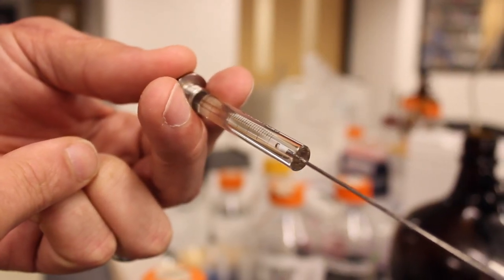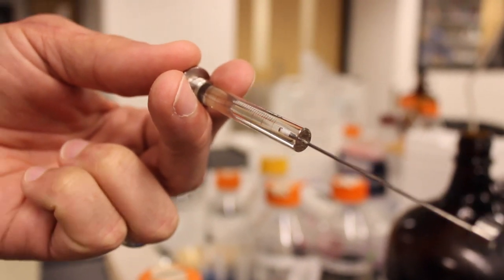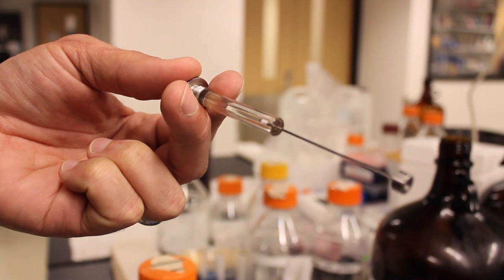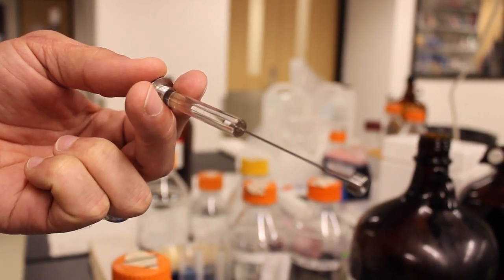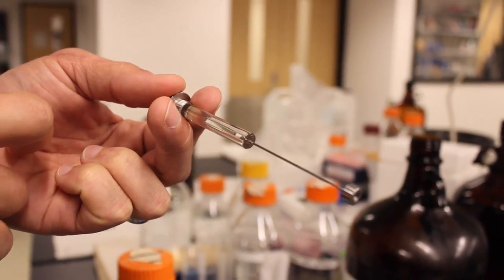This gap acts as a sort of shock absorber so that the solution is ejected smoothly as it steps from one titration step to the next. It's important to have that gap in there you don't want the plunger touching the top of the syringe.